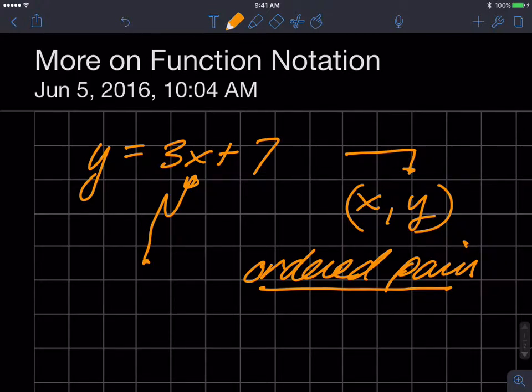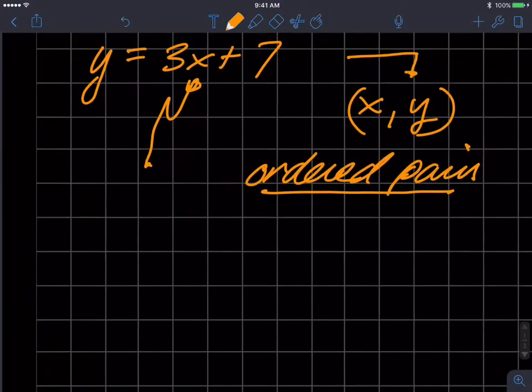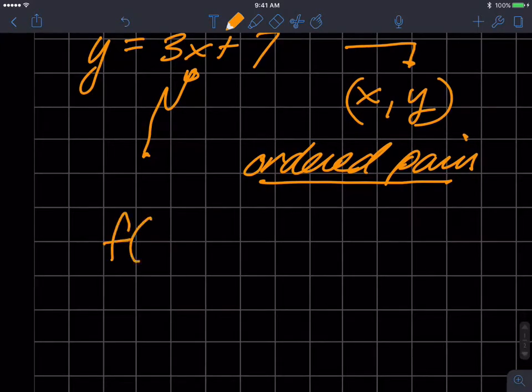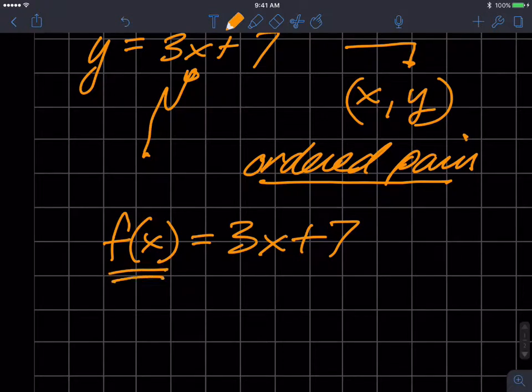So once I determine that it's a function by doing the vertical line test or understanding it's a line, then in fact I can write it this way. Or in other cases, people will write functions with this function notation telling you explicitly that the thing that I'm giving you or showing you is a function.